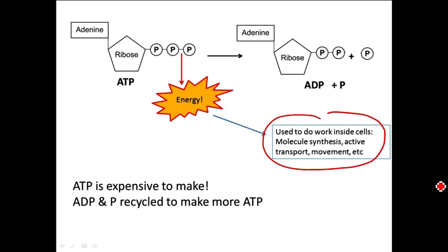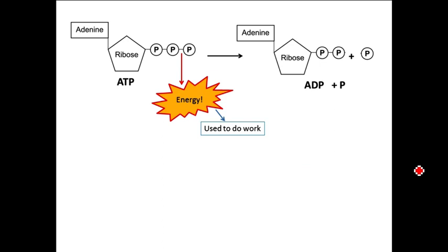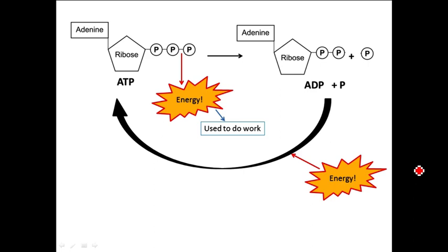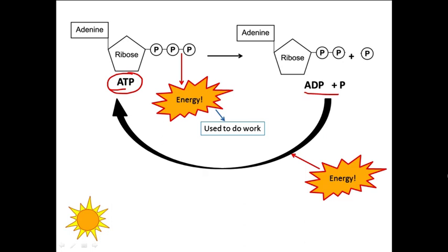ATP is very expensive to make — it's a large molecule with lots of atoms and high energy bonds. So it doesn't make sense for the cell to dismantle the entire ADP and start making ATP from scratch. Instead, it makes sense for the cell to recycle ATP: take the ADP that was made when ATP was used to do work, add some energy, and regenerate the ATP. So we get this back-and-forth cycle between ATP releasing energy that's used to do work, generating ADP plus a phosphate group, and then getting back to making ATP. This is what cellular respiration does.